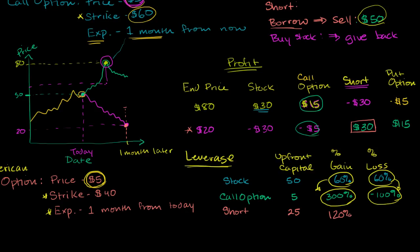Of course, in this scenario, you gained when the stock went down. In terms of loss here, when the stock went up to $80, we lost $30 by shorting. So we had a 120% loss.